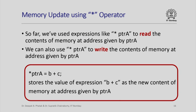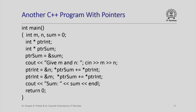So far we have used expressions like 'star pointerA' to read memory at the address given by pointerA. C++ also allows 'star pointerA' on the left-hand side of an assignment to write to that memory. For example, the statement 'star pointerA = b + c' calculates b + c and stores that value as the new content of the memory at the address given by pointerA — it updates that memory location.